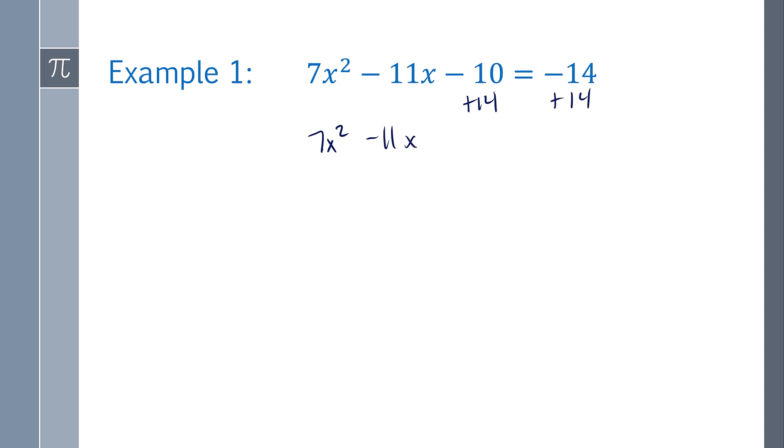Now I want to see, does it factor? So I'm going to do a times c, so I get 28. Factors of 28 that add to a negative 11 is going to be 4 and 7, if they both have a negative. So I can rewrite that middle term as the minus 4 and the minus 7.